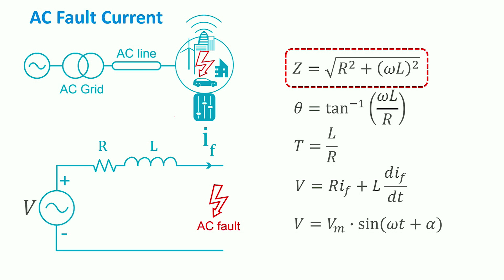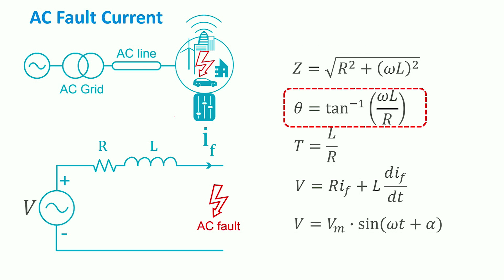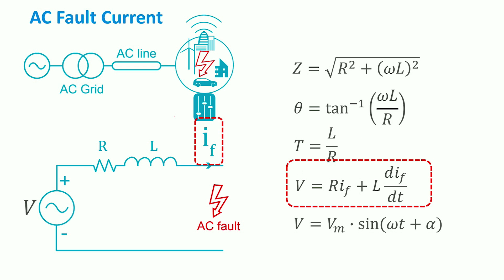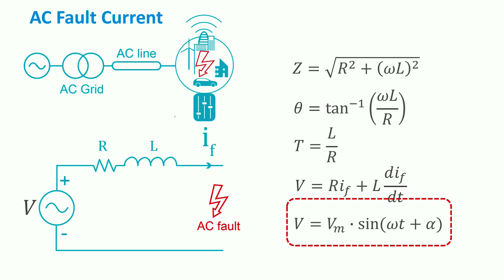The phase angle theta between the real component — meaning the resistance — and the imaginary component — meaning the inductance — is obtained using the arctangent function. The time constant of the impedance T is calculated by dividing the inductance L by the resistance R. If we define the fault current from the grid to the microgrid as IF, then the grid voltage can be formulated by the differential equation. This voltage has the amplitude of Vm, the angular frequency of omega, and the initial phase of alpha.